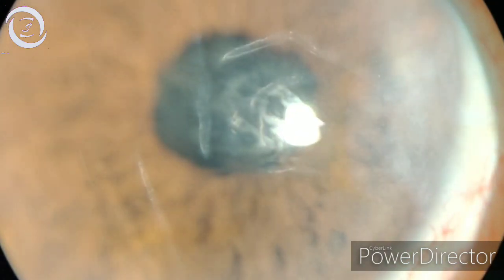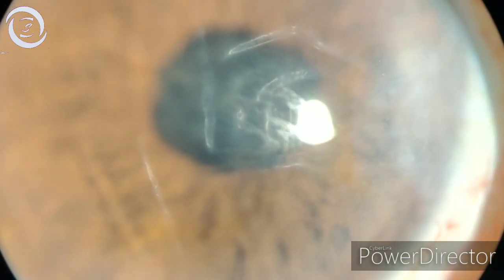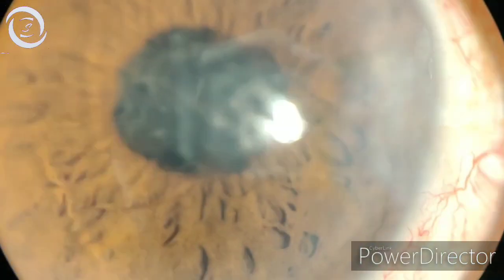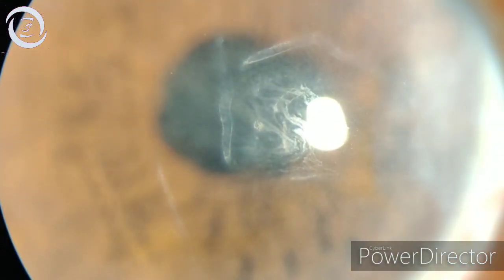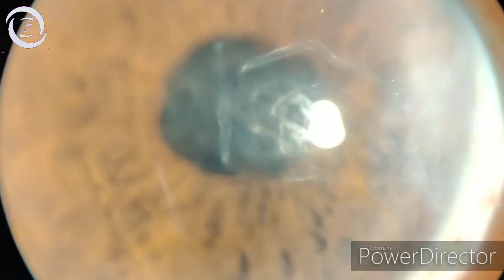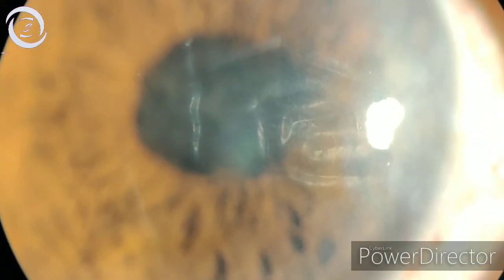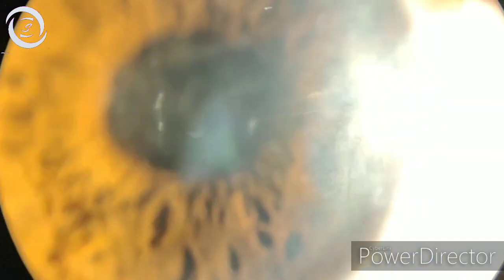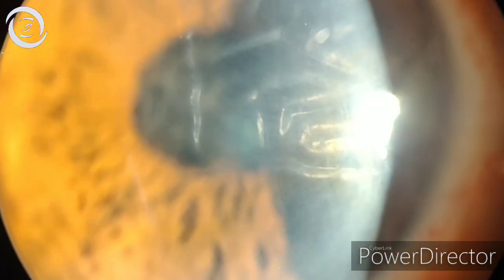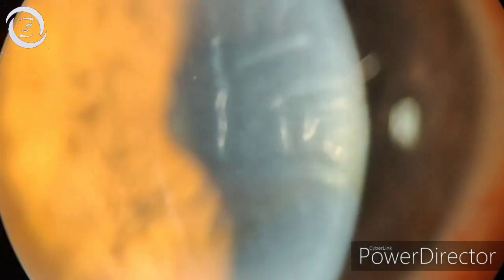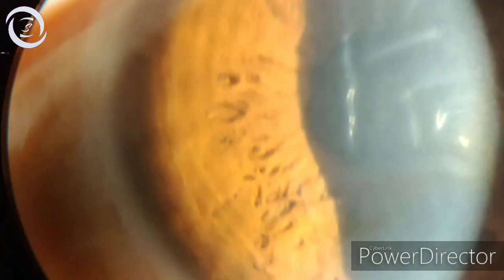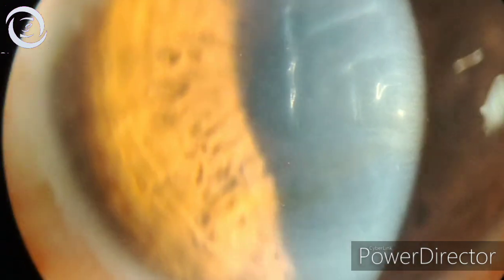Now why does endothelial cell loss occur after cataract surgery? Well, definitely when you make incisions into the cornea you damage some endothelial cells. And then if you use high phaco power for very hard cataracts, that high ultrasonic power and the heat generated damages the endothelium.